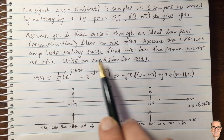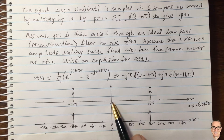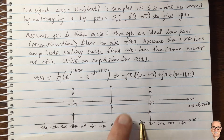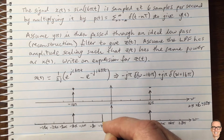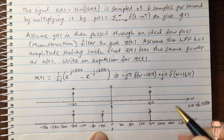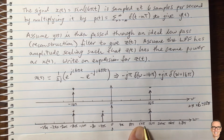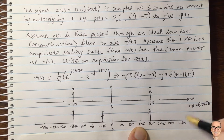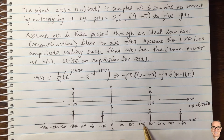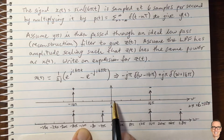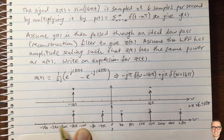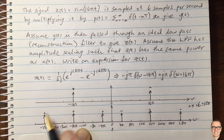We're ignoring amplitudes for now since the filter accounts for those. For the copy centered at 12π: 12π − 16π gives a delta function at minus 4π with a positive j, and 12π + 16π gives a delta function at 28π with a negative. For the copy centered at minus 12π: we get a delta function at 4π with a negative, and one at minus 28π with a positive.